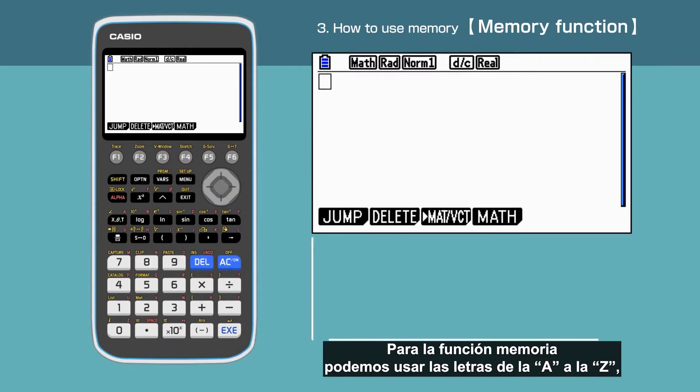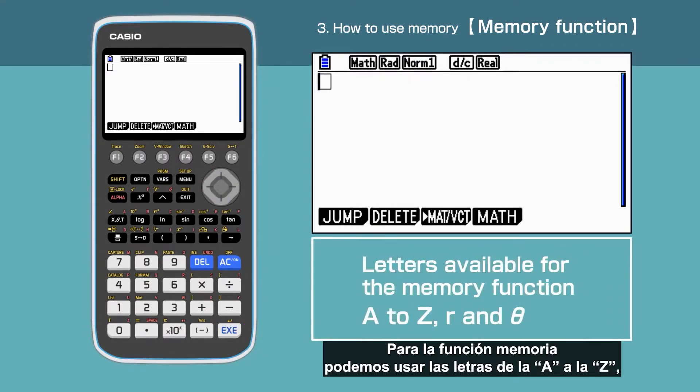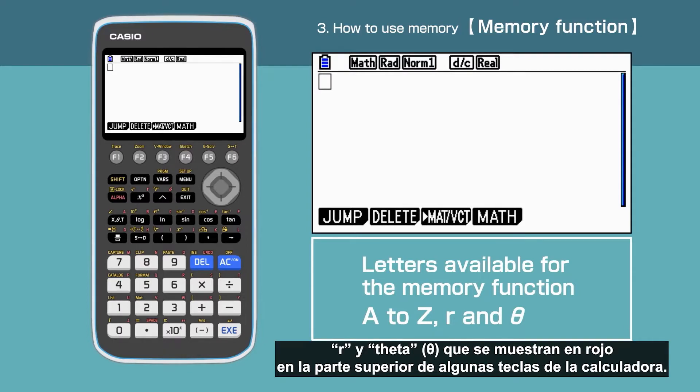For the memory function, we are able to use the letters between A and Z, R and Theta, showing in red above the calculator keys.